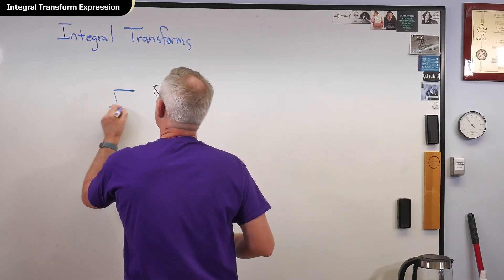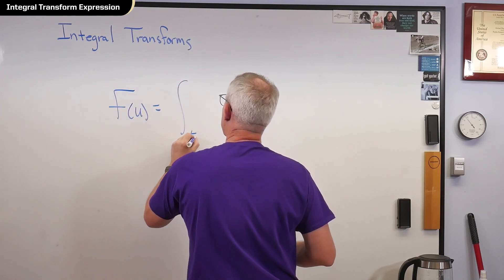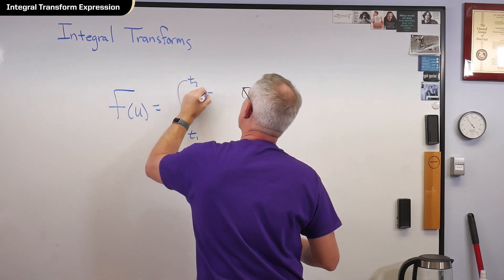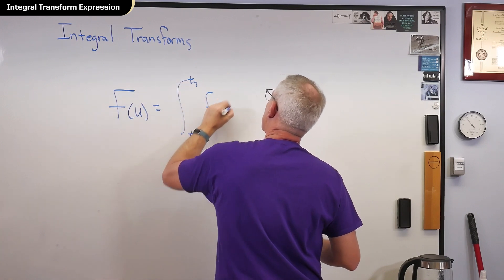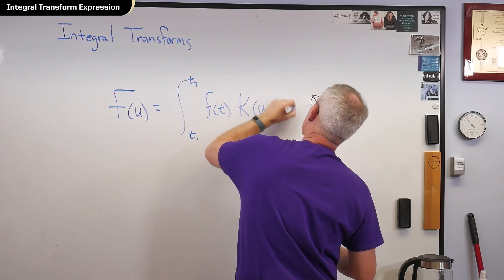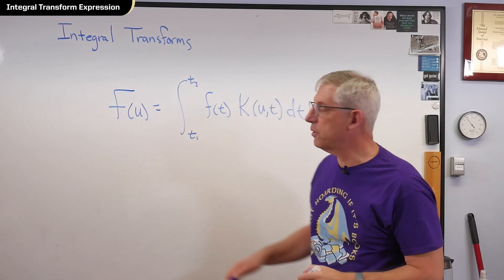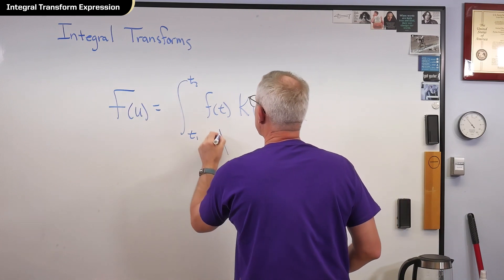So if I have a function of some variable, and I'll call that variable t, I can do this to it. Okay, this is the integral transform. This is the initial function you've got.